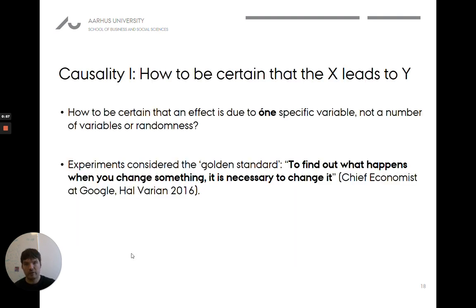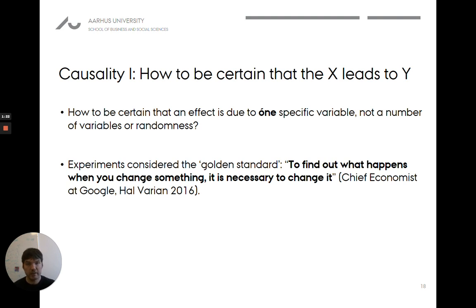This is the question we also grappled with in the former video: how can we be certain that an effect is due to one specific variable, and not just a random correlation or other factors we hadn't thought about? As the chief economist at Google said in 2016, to find out what happens when you change something, it's necessary to actually change it. That's really the essence of the experimental approach.